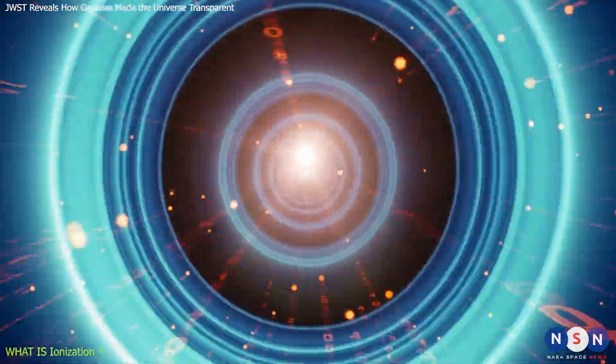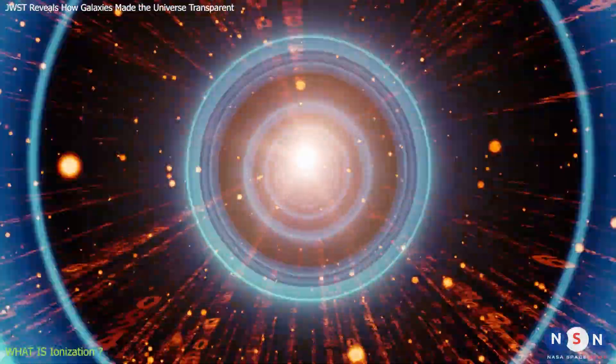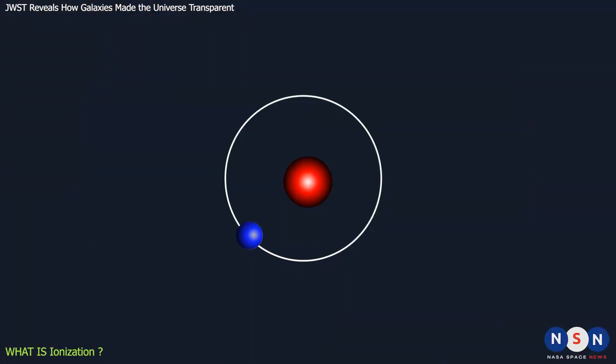The minimum amount of energy required to ionize an atom or molecule depends on its type and structure. For example, hydrogen atoms are easier to ionize than helium atoms, because they have only one electron to lose.